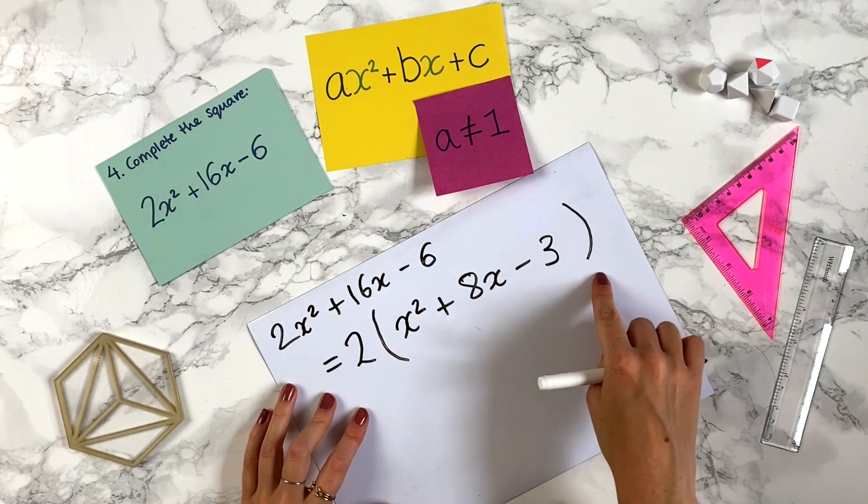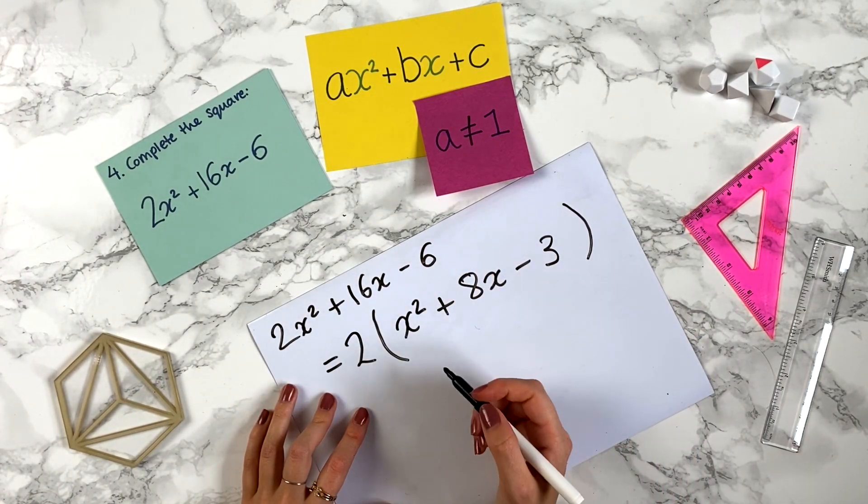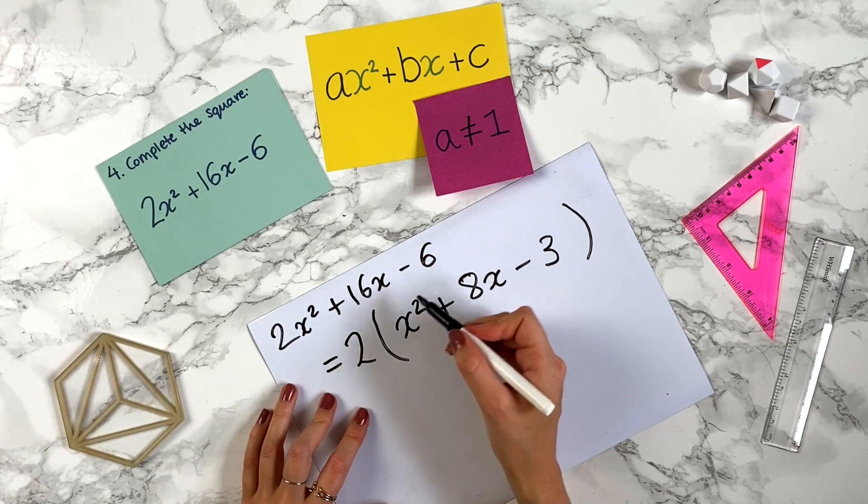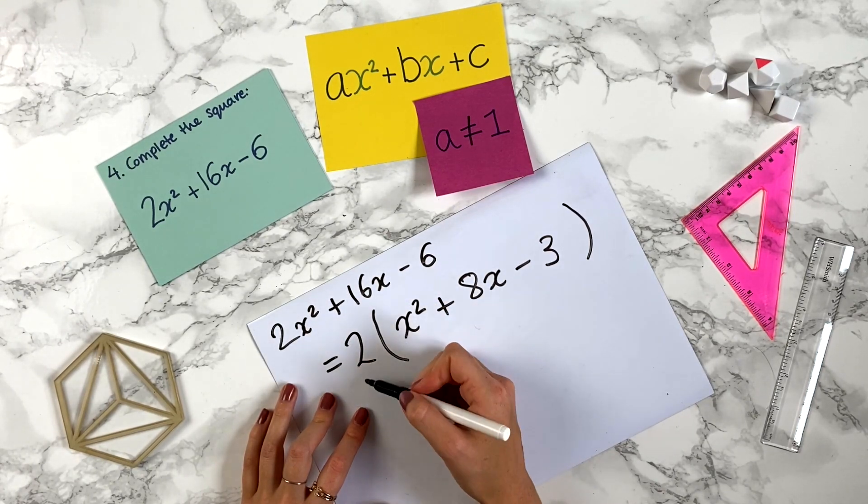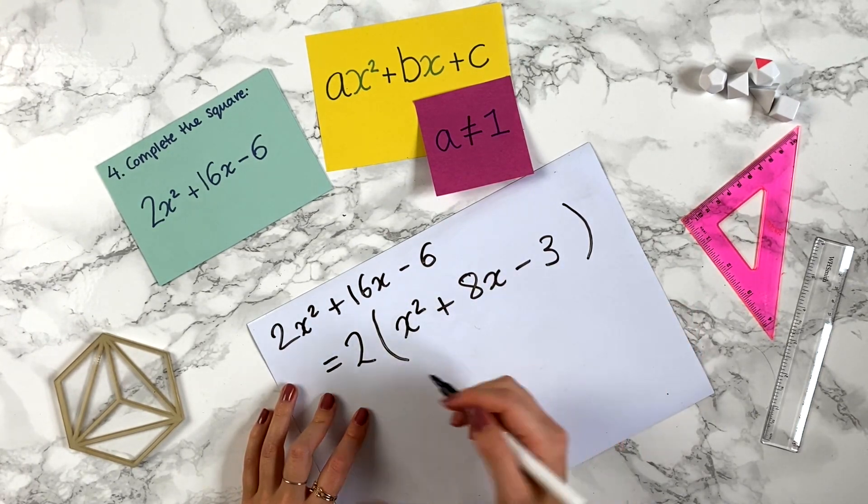Hopefully you can see that this line is the same as this line, because if you multiply this out you get 2x squared plus 2 times 8 is 16, minus 2 times 3 which is 6. So that's the same.